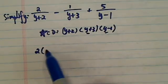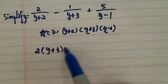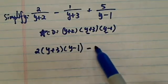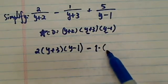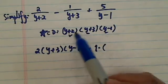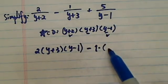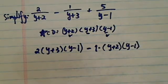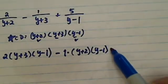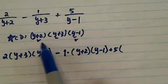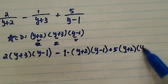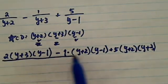So we have (y plus 3)(y minus 1). Minus 1 times the second term, which is missing this one and this one, so we have (y plus 2)(y minus 1). The third term is missing this one and this one, so we have (y plus 2)(y plus 3). The whole thing is over our common denominator.